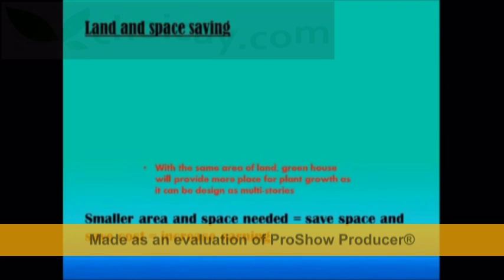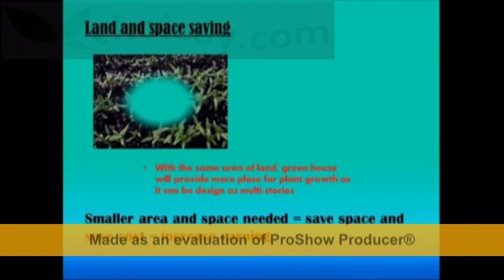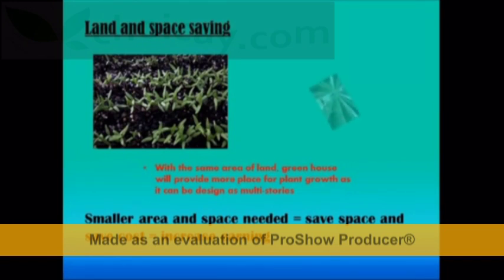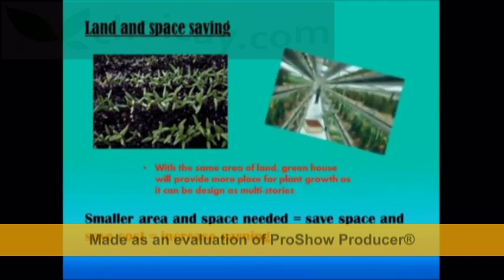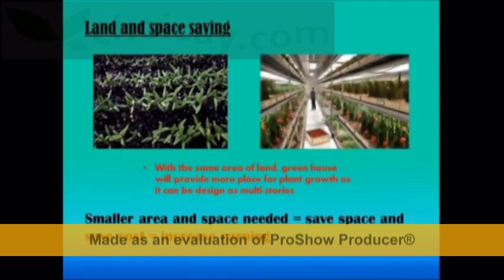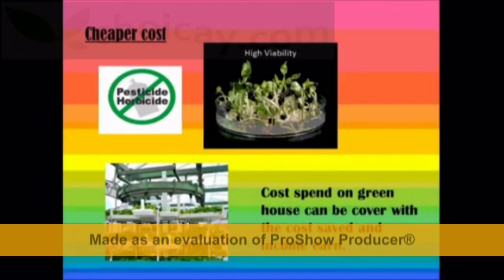It can reduce land usage by using greenhouses. This saves space and land by designing multi-story greenhouses compared to conventional plantation using a single layer of soil. With lesser land to be purchased and a smaller area to maintain, costs are saved. Furthermore, it is cheaper in cost as purchase and usage of herbicides and pesticides are avoided, and preparing a defined medium is cheaper than purchasing fertile soil for every germination batch.